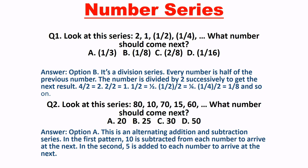Dekhiye, agar haam carefully is question ko dhekhte hai, toh eek baat samaj mein aati hai. Number 80 mein se agar aap 10 minus kerate ho, toh aapko 70 mil jata hai. Aur number 10 mein agar aap 5 add ker rhe ho, toh aapko 15 mil jata hai. Usi prakar se, hum log ab next number mein 15 plus 5 karenge, toh hume number milega 20. Usi hisaab se, yahaan par option A, that is 20, is the correct answer.